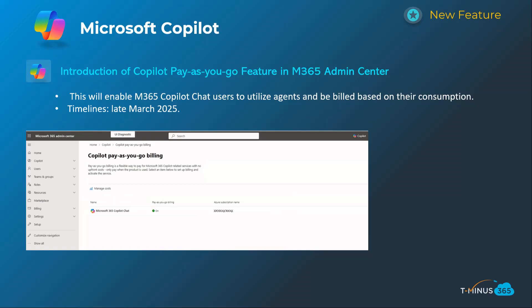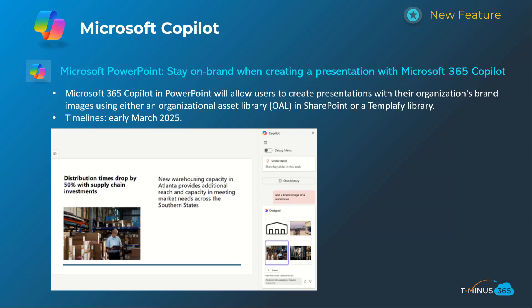Next is specifically for the pay-as-you-go feature if you're utilizing agents in the consumption-based model versus a paid subscription within the Microsoft Copilot realm. It's fairly complex to understand what your usage bill is going to look like, but this is giving you a central location to manage and view that over time. This will happen late March 2025.